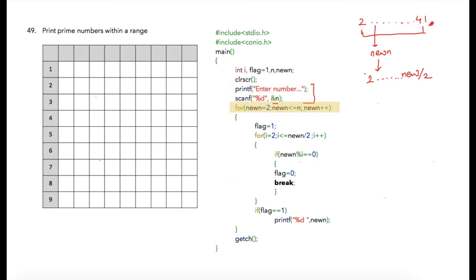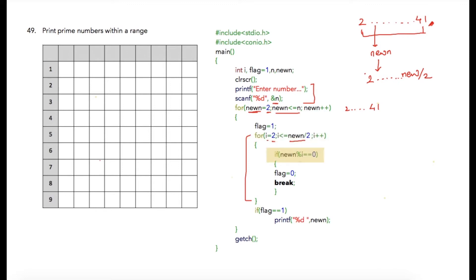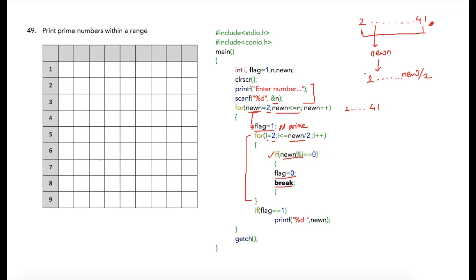We ask the user to enter n, which will be the end of the range — 41 is stored in n. Then we initialize a variable newn from 2, and the outer loop runs while newn is less than or equal to n, iterating from 2 to 41. In each iteration, we apply the core prime-checking logic: divide newn by values from 2 to newn divided by 2 to check divisibility. Because we're checking multiple numbers, we use a flag variable — flag is initialized to 1, assuming the number is prime. If the number gets divided, flag is reset to 0 and we break the inner for loop, since there's no need to check further.